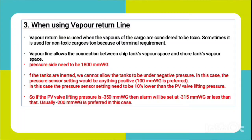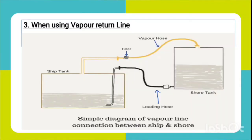When using a vapor return line - the vapor return line is used when the vapor of the cargo is considered toxic, and sometimes for non-toxic cargos due to terminal requirements. The vapor line allows connection between the ship's tank vapor space and the shore tank vapor space. As shown in the figure, the loading hose goes to the ship's tank and the yellow line is the vapor line connected from the upper part of the ship's tank to the shore tank.